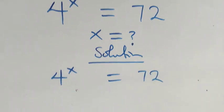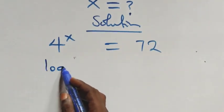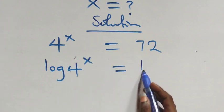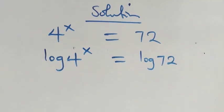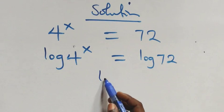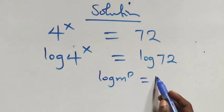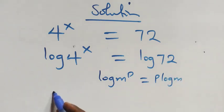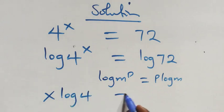Here we take the log on both sides, that is we have log four raised to the power x equals to log seventy-two. Here we apply the power law of logarithms, where log m raised to the power p is the same thing as p log m. That is, what we have here becomes x log four equals to log seventy-two.